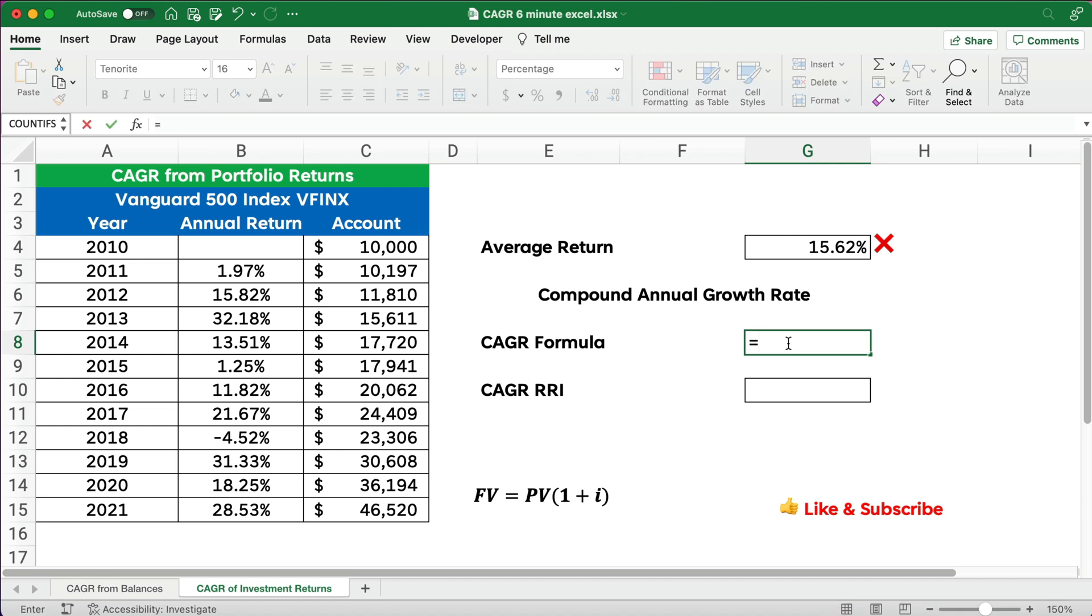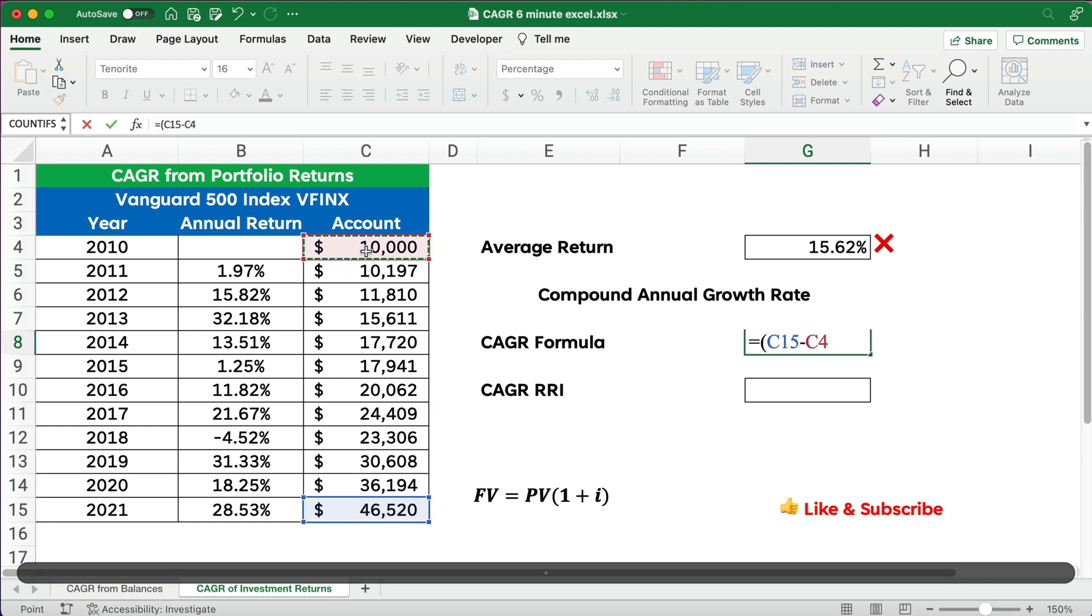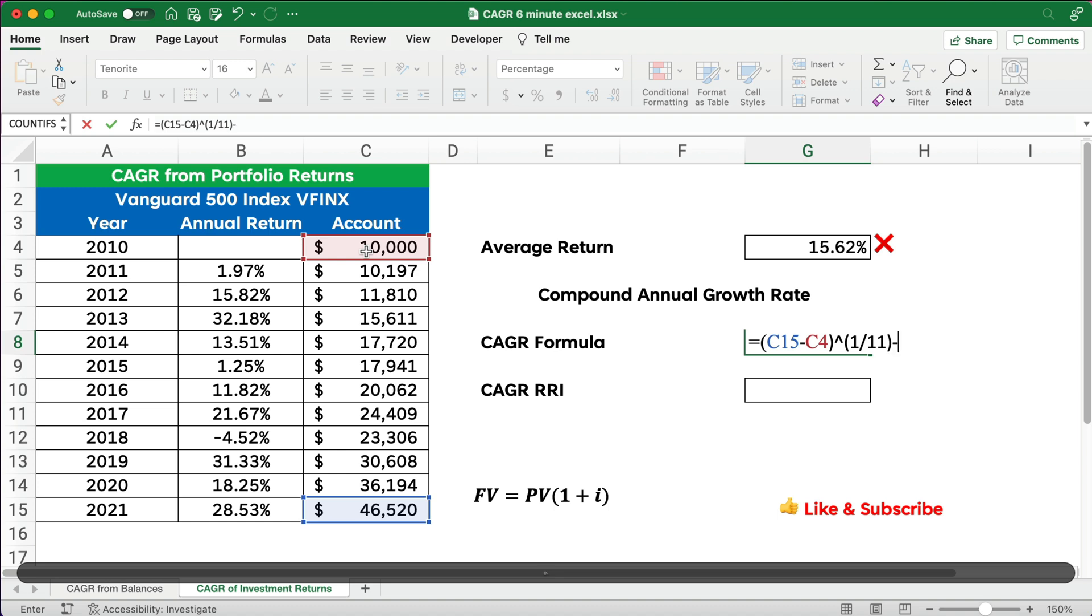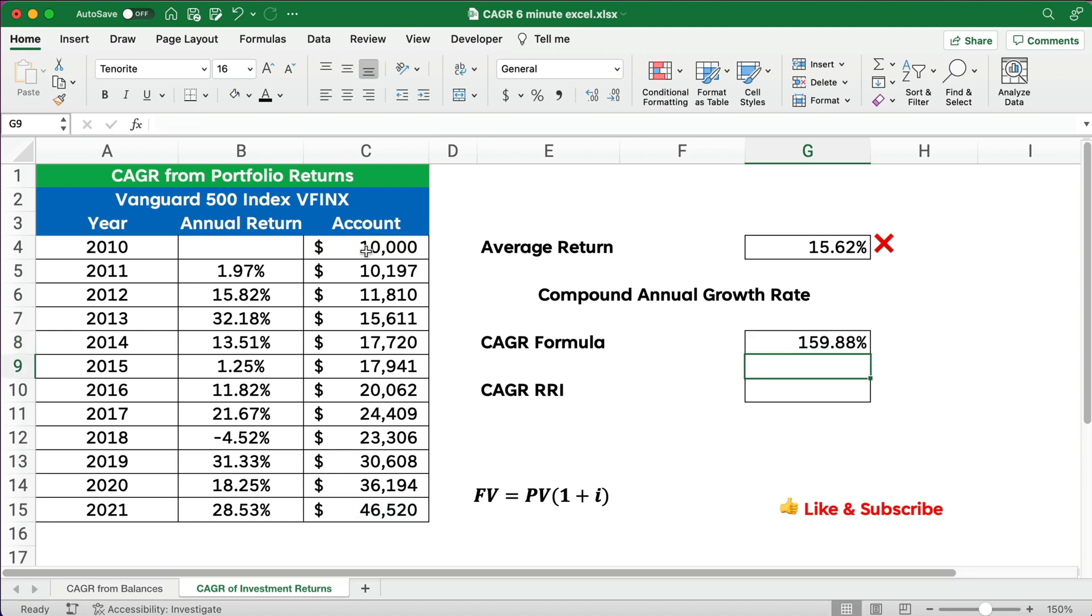It's going to be our ending minus the beginning to the exponent 1 divided by 11, and then the whole thing minus 1. And so we get the wrong number. So we need to divide, sorry, so 15% is our compounded annual growth rate. We did it just a minute ago.